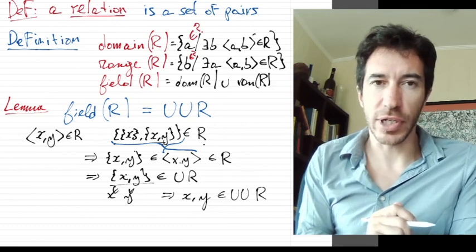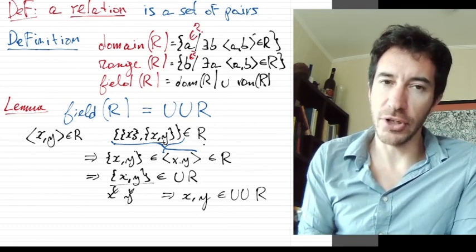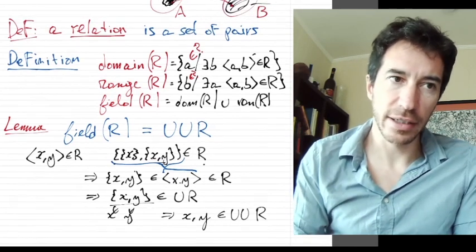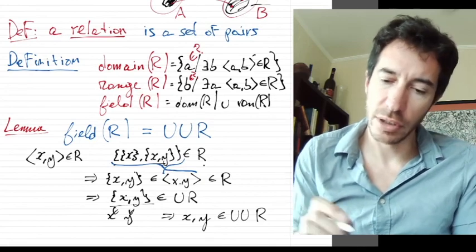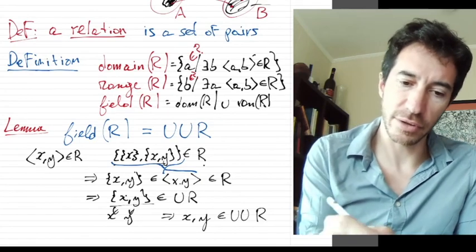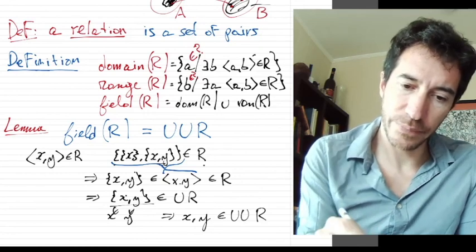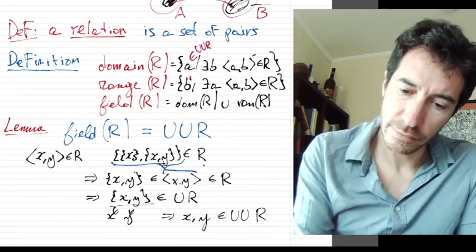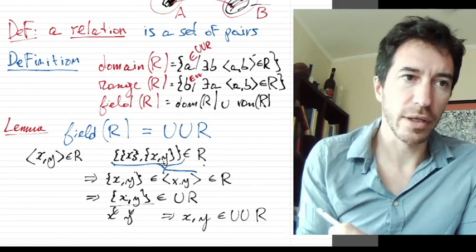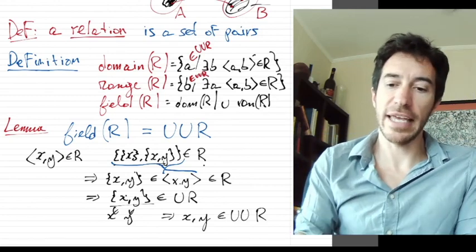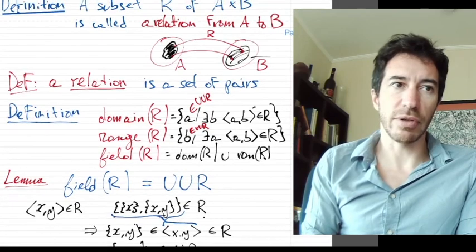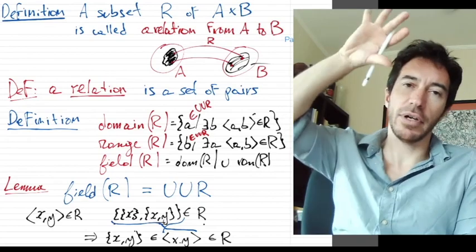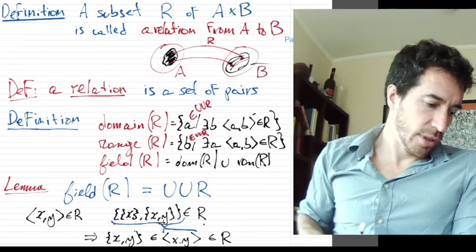The other way around, I leave you guys to try to exercise the other inclusion. That if you belong to the union of the union of R, then you belong to the field of R. So that means that we can define the domain and the range using our field that we just defined. They belong to the union of the union of R. So that's how we define the domain and the range. The A and the B that correspond to the relation, we define them using the union of the union of R, which we have from the general union axiom.